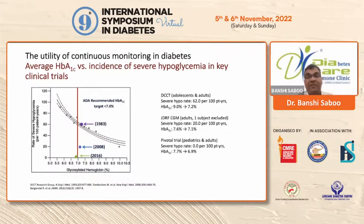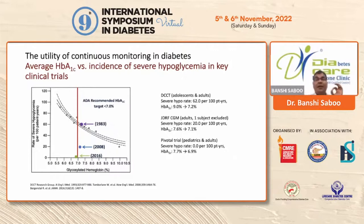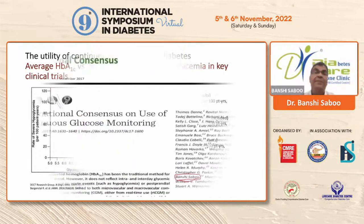Then in 2008, 25 years later, a similar study — the JDRF CGM trial — used continuous glucose monitoring. The mean A1C was already better at 7.6, and they could achieve 7.1. In a pivotal trial in 2016, using an integrated CGM with a pump, they could achieve A1C from 7.7 down to 6.9 with 0% hypoglycemia. You can understand the importance of continuous glucose monitoring in type 1 diabetes, but I will be talking about type 2 as well.